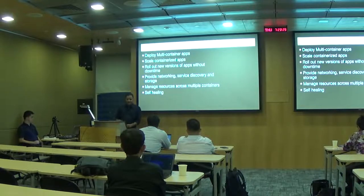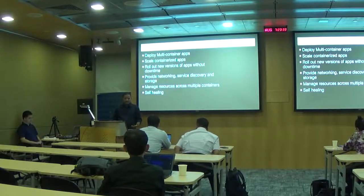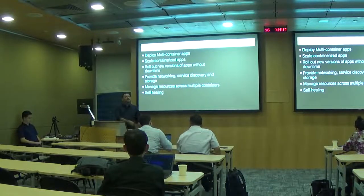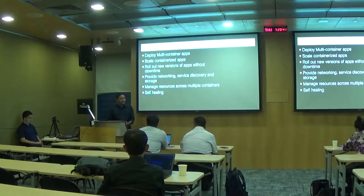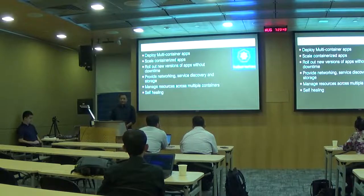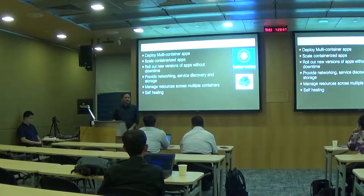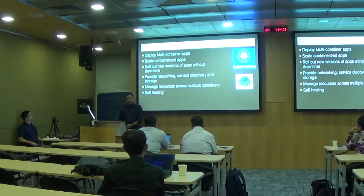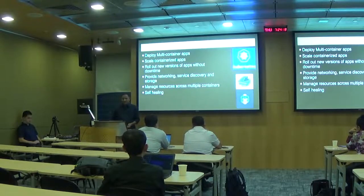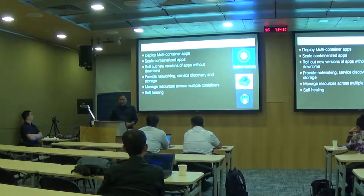Kubernetes also provides self-healing. You can define policies for what should happen if a container dies — for example due to out-of-memory or a crash — and it can restart itself. This resilience is built into the application. Currently Kubernetes is the most popular orchestration tool in the market. Almost every cloud vendor supports it, it originated at Google, and it is extensively used. Other options include Docker Swarm and Mesos.